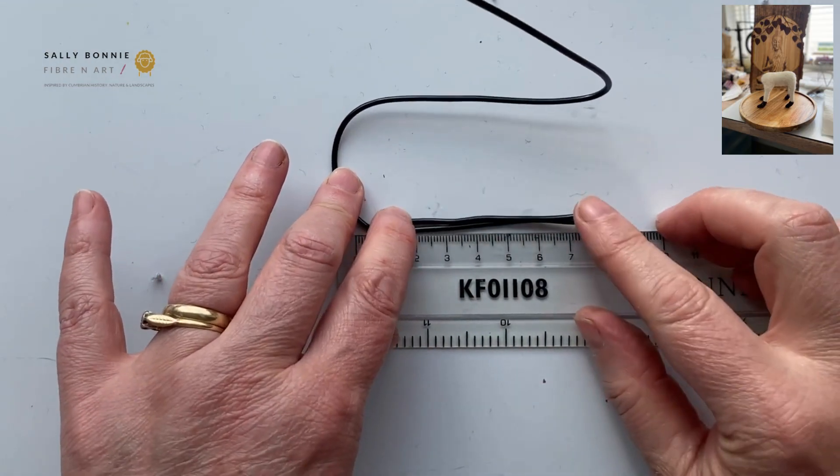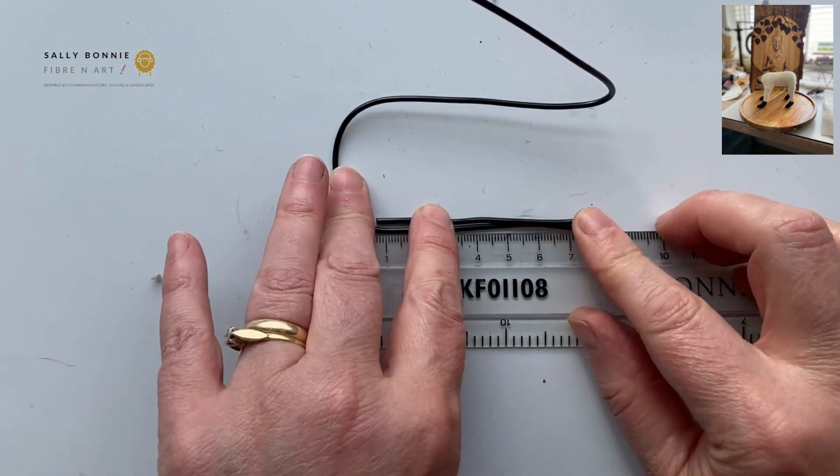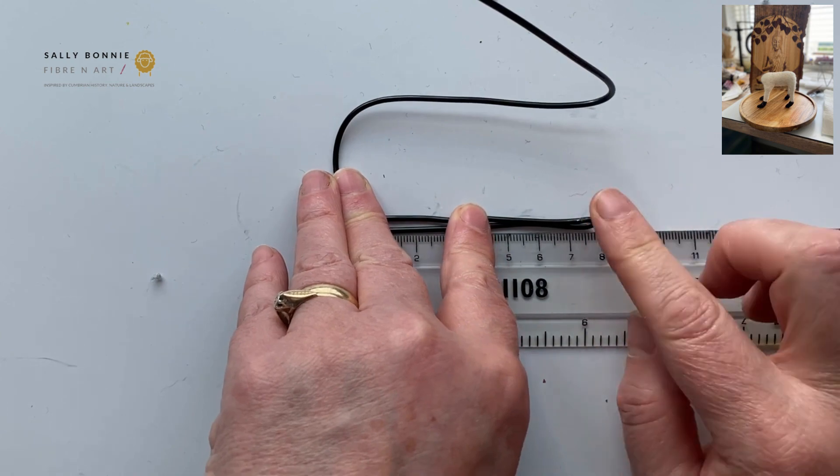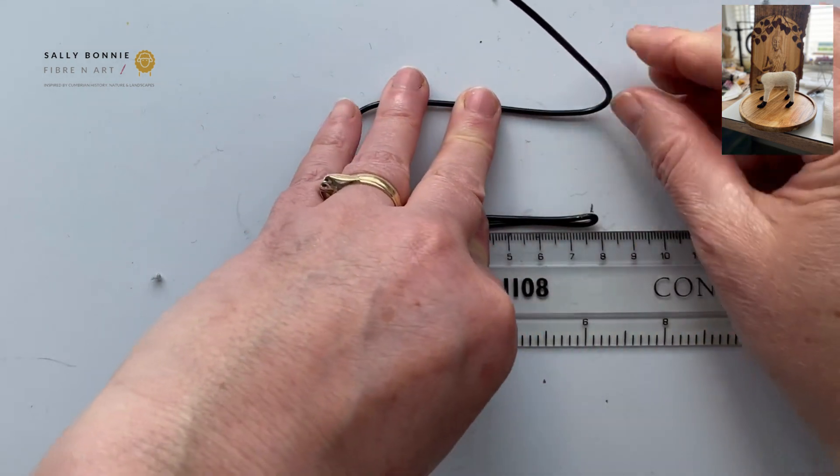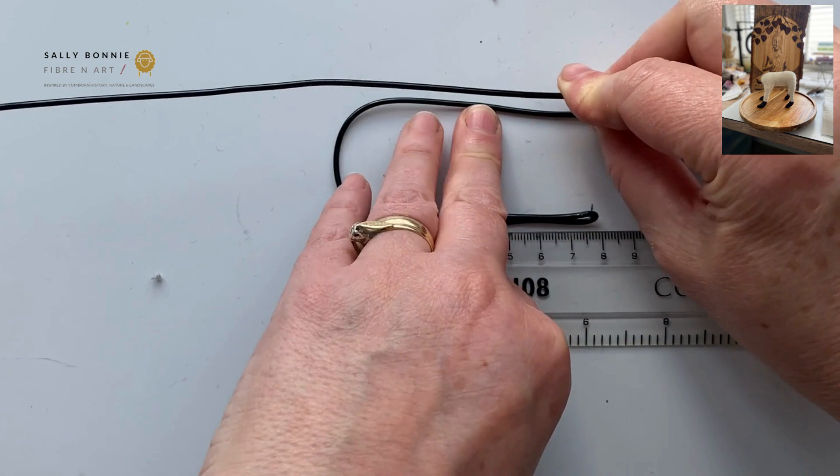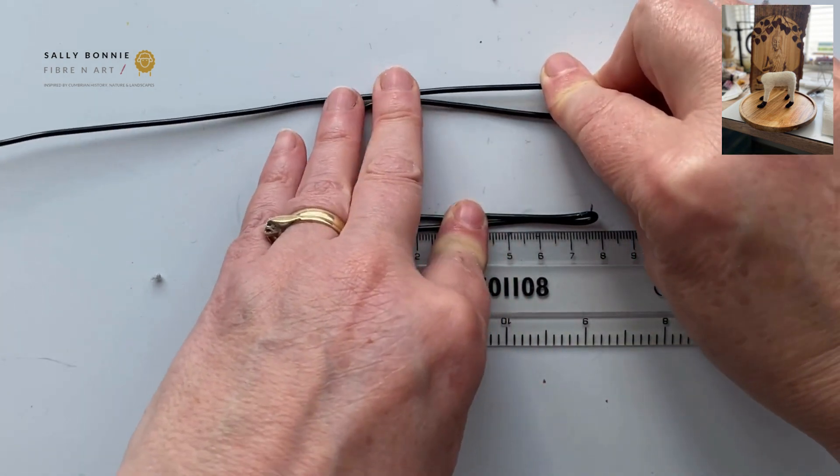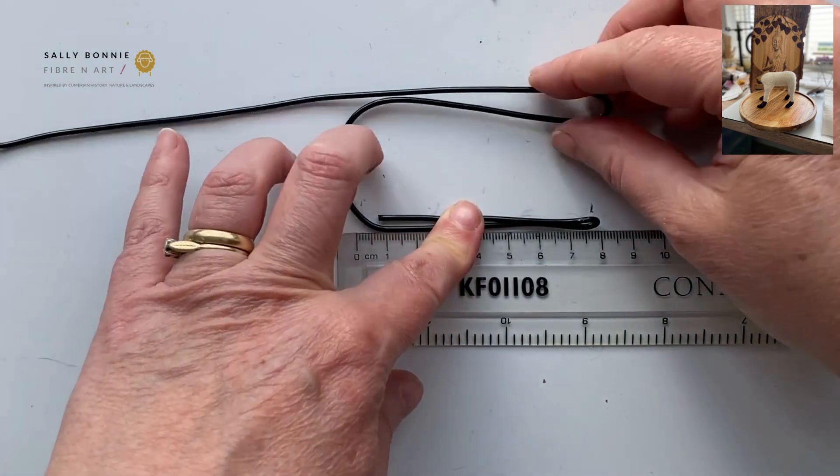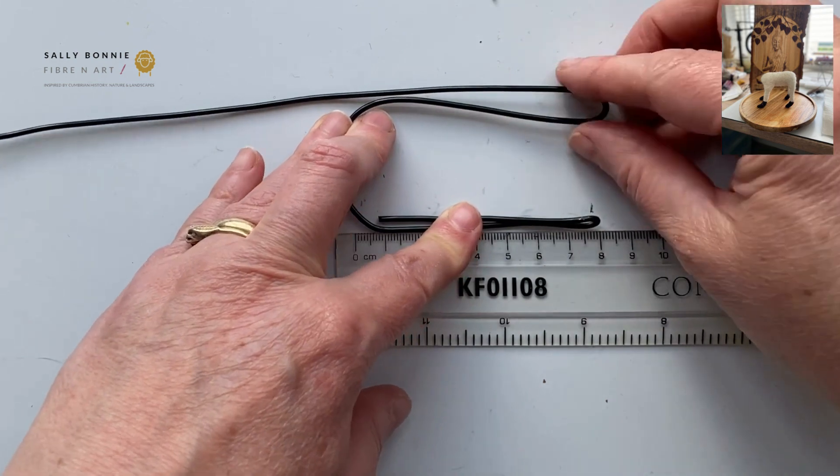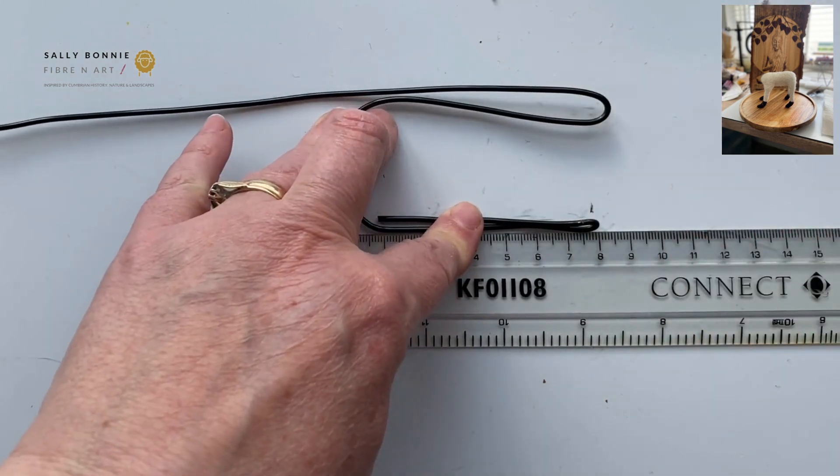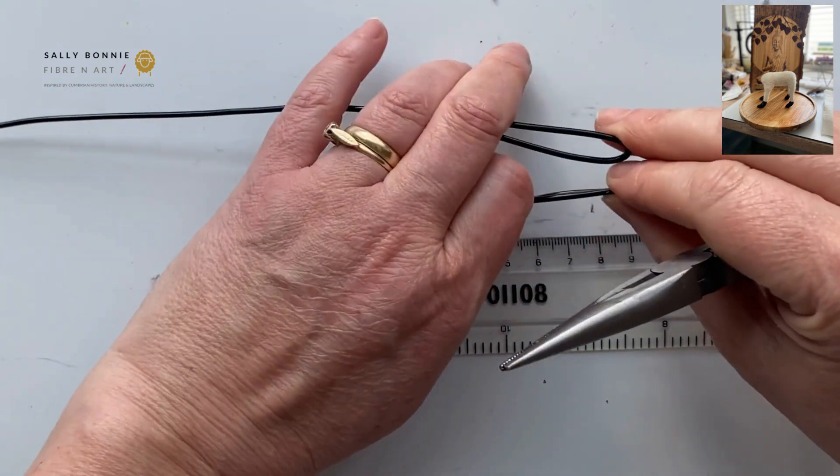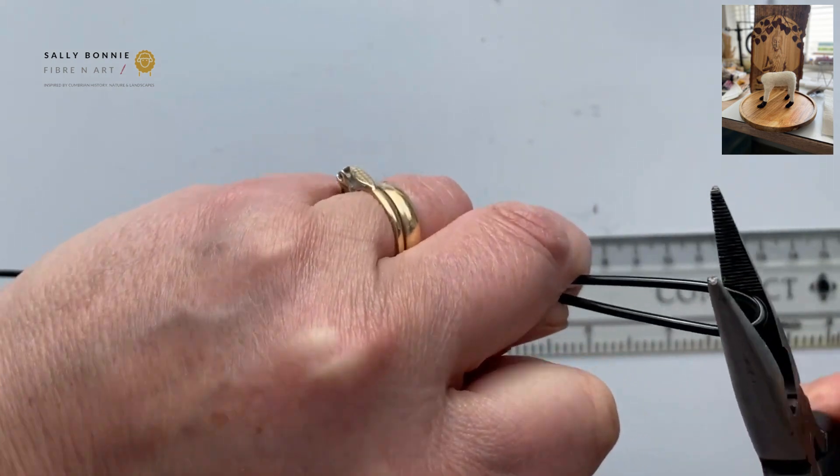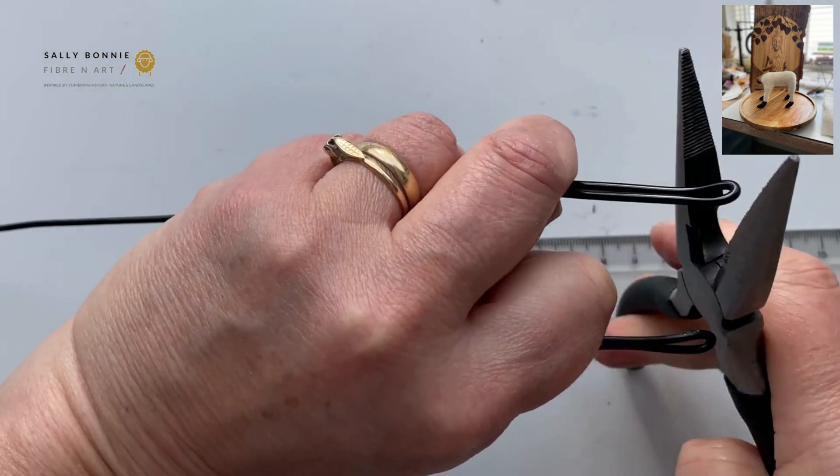Don't worry too much about these measurements being perfect because we can make some corrections with wool. So don't worry too much. With this one now, bend this back. And again the same, we want these as close to being the same length as possible or you're going to have a wonky sheep before you start.